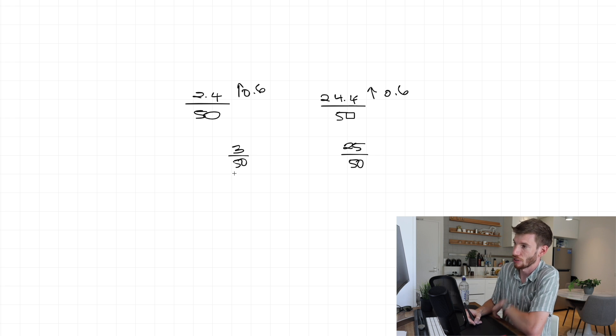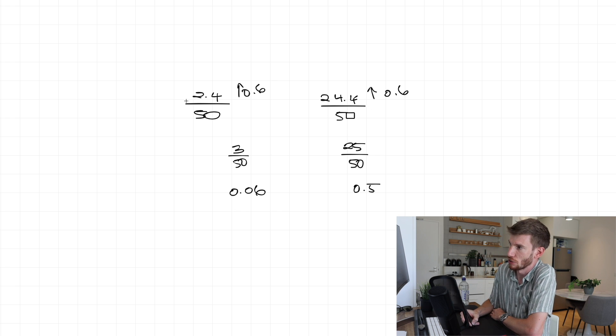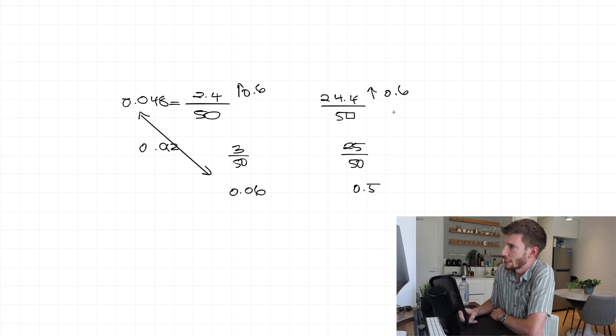And so of course, then if we estimate those with 50ths, I'd probably go a 50th is 2% or 0.02, three lots of that is 0.06. And then over here, this is exactly half, 0.5. So of course, we're not trying to say the two numbers are the same. But if we look at that relative to the actual value, this one over here, 2.4 out of 50 is 0.048. So if we look at the actual error margin that we have there, we have an error margin of 0.012. If we compare 24.4 out of 50 to our estimated 25 out of 50, this here would give 0.488. And so again, our error margin is 0.012.